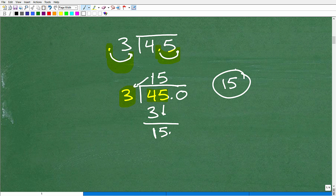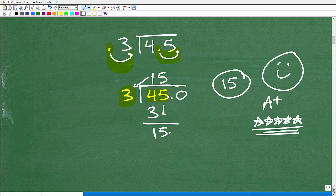But 45 divided by 3 is 15. So that is our answer. Now, if you got that answer, I must give you a wonderful little happy face with an A+. And because we're talking about elementary school, I'm going to give you a bunch of stars. Because I remember way back in the good old days, getting all these stars,